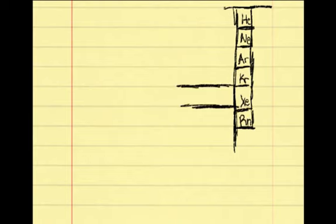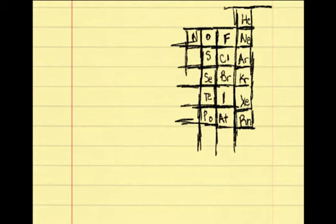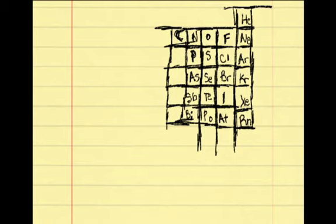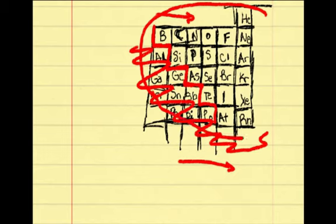The elements that are considered non-metals are helium, neon, argon, krypton, xenon, radon, fluorine, chlorine, bromine, iodine, astatine, oxygen, sulfur, selenium, tellurium, nitrogen, phosphorus, arsenic, carbon, silicon, and boron.